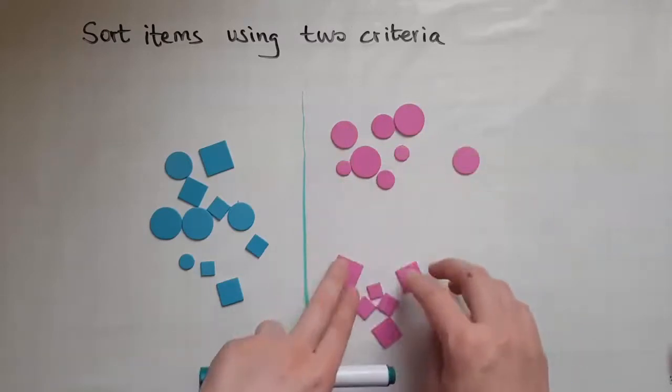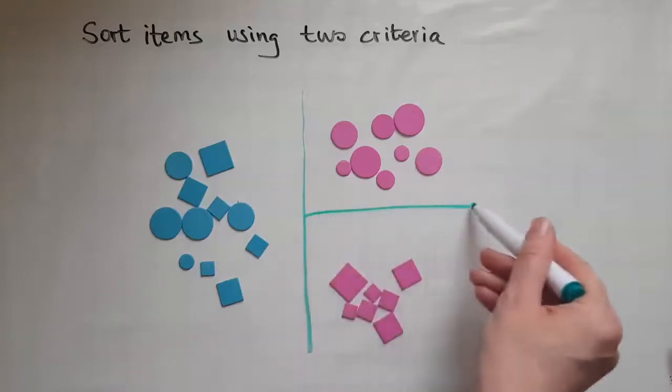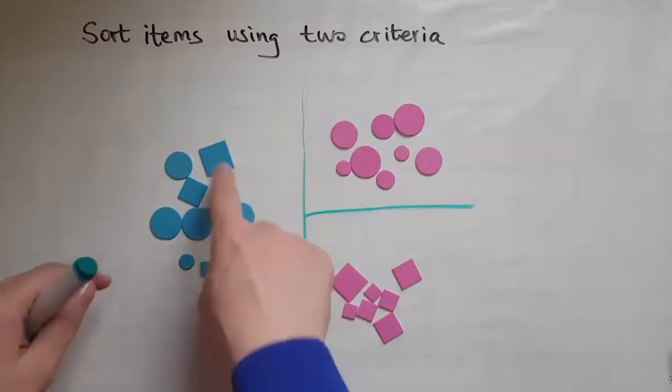So I'll separate the circles from the squares. And I'll do the same on the other side.